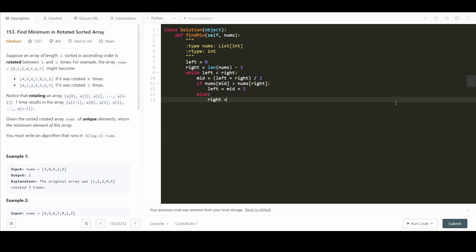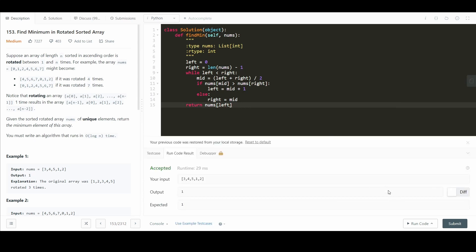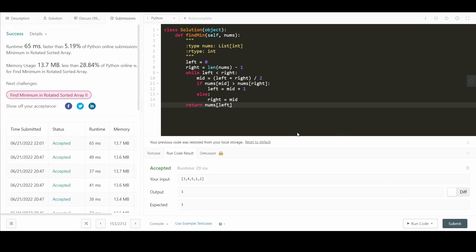And we know mid cannot be the minimum element because it's greater than nums right else. We just make right equal mid. The very end, we just return nums at left. We got the right answer here and let's submit. And that's it.